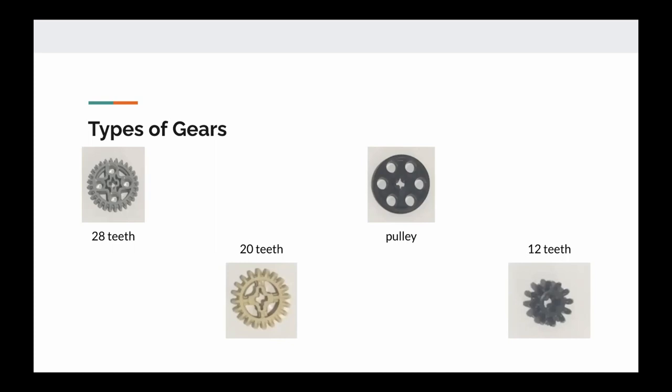So the first gear here has 28 teeth, whereas this second gear has 20 teeth, and this gear has 12 teeth.